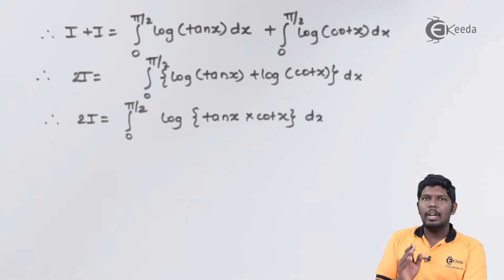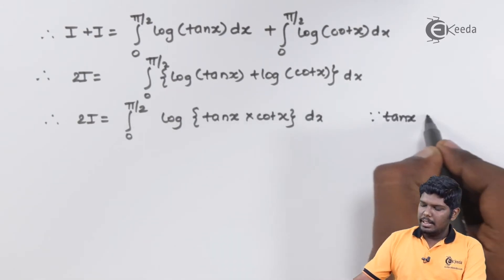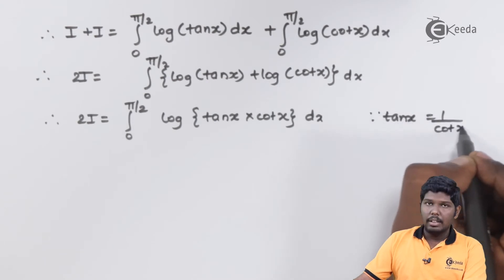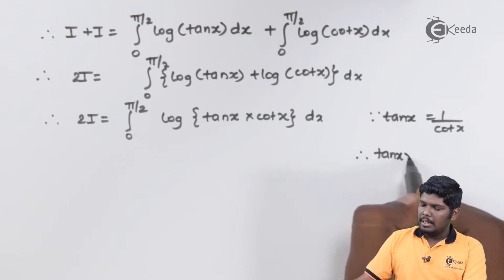log of tan x plus log of cot x will give you log of tan x into cot x dx. Now as we know that tan x and cot x are reciprocals of each other. Therefore the product of tan and cot is always 1. Since tan x is equal to 1 upon cot x, therefore you can see tan x into cot x will give you 1.